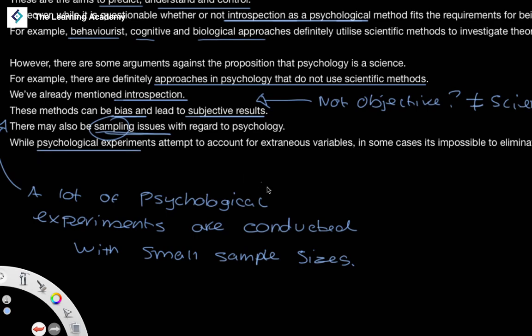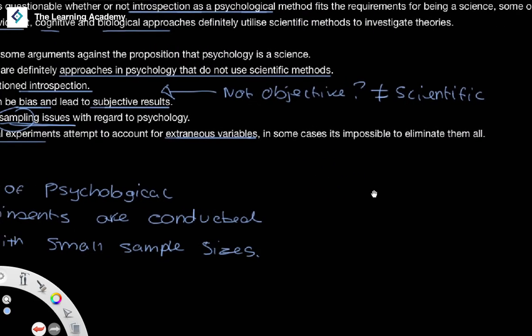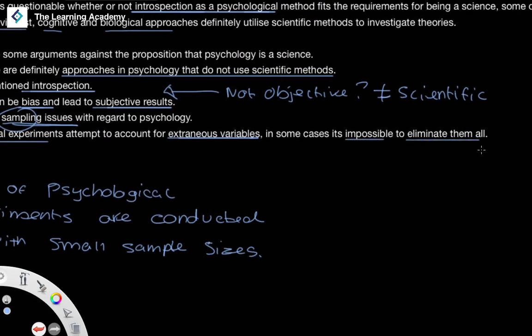And while psychological experiments attempt to account for a number of extraneous variables, a number of these externalities that could impact the result, in some cases it is impossible to eliminate them all.